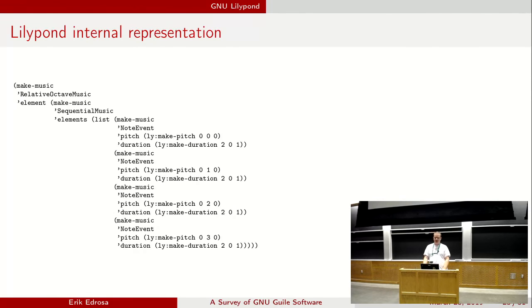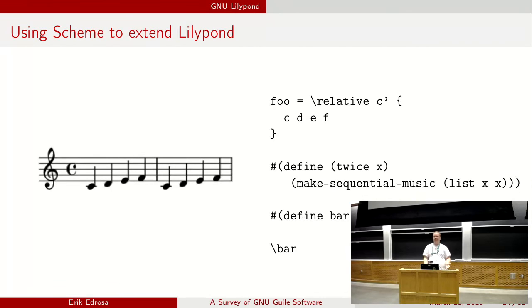So what does this actually look like? There's a LilyPond internal representation in Scheme. As you can see, that 'relative music' creates a 'make-music' call for 'RelativeOctaveMusic' — that was the backslash relative. Then we make a C, then we have a sequential bunch of notes. You can actually put inline Scheme into LilyPond. Here we take that previous 'foo' variable and define a procedure called 'twice,' which creates sequential music by repeating the theme twice. Then we call 'twice foo,' access that foo variable, assign it to 'bar,' print it out, and it just repeats it twice.